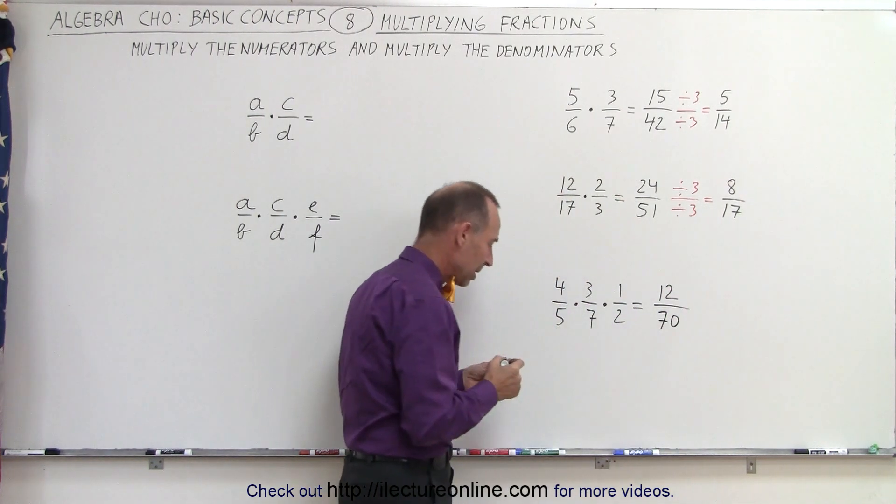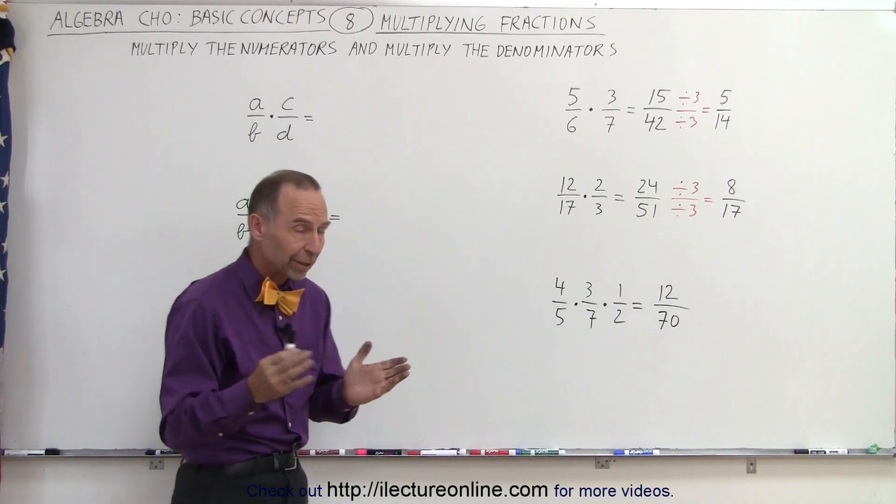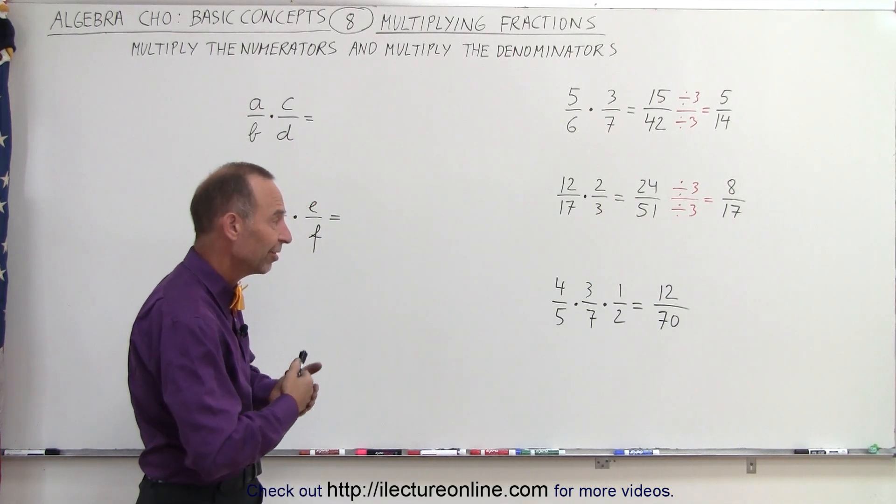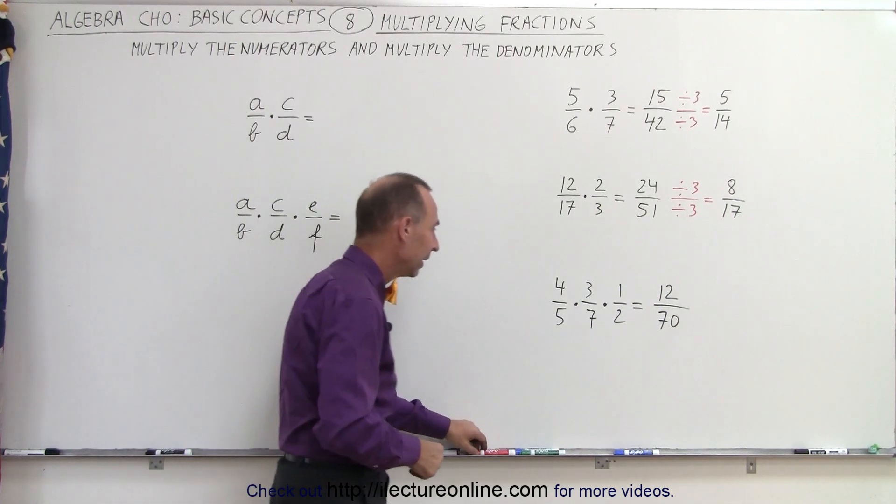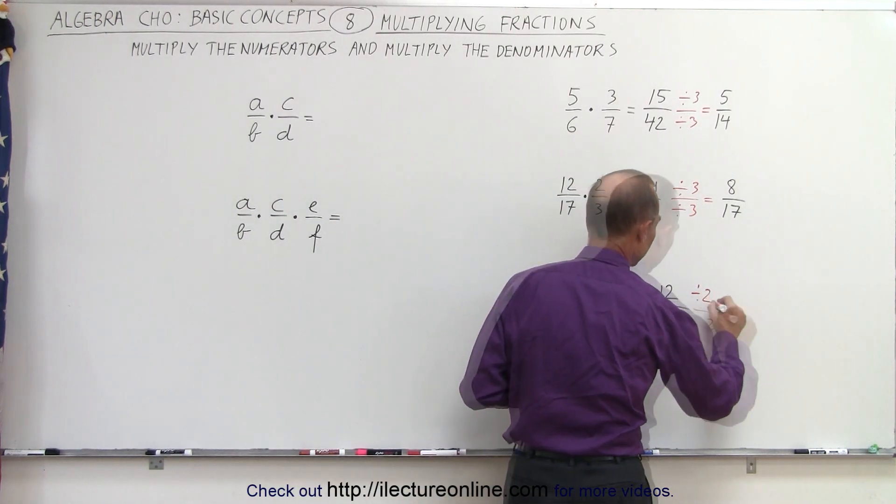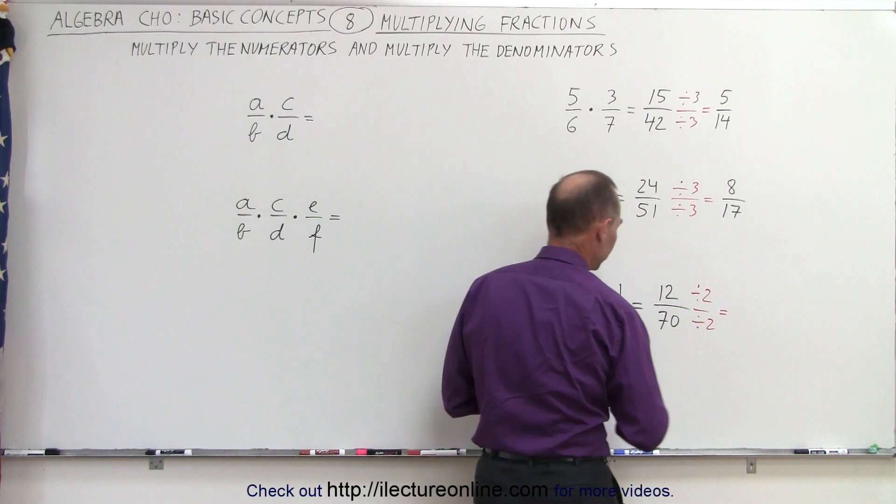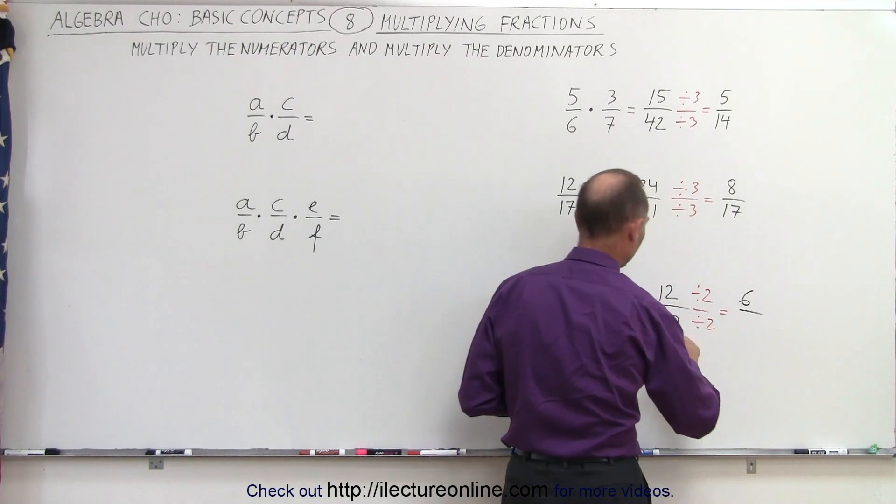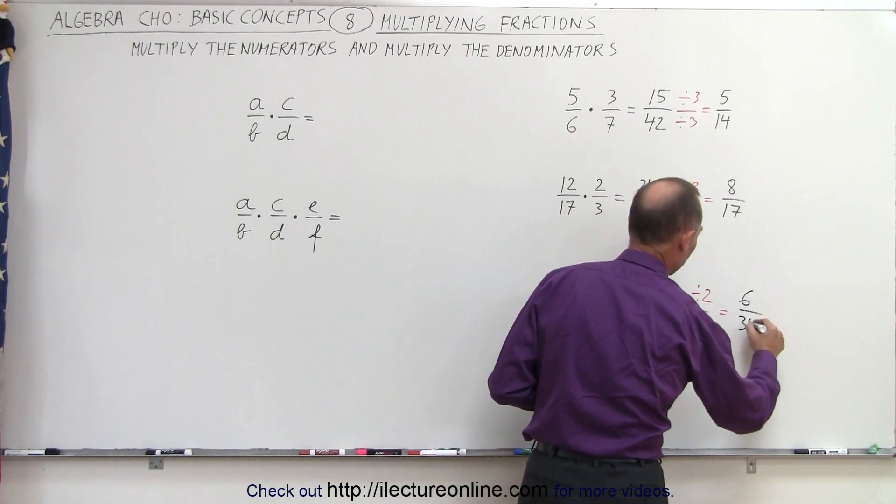That would be the result when we multiply all 3 fractions together. But since they're both even, we can divide both the numerator and denominator by 2. So 12 divided by 2 equals 6, and 70 divided by 2 equals 35.